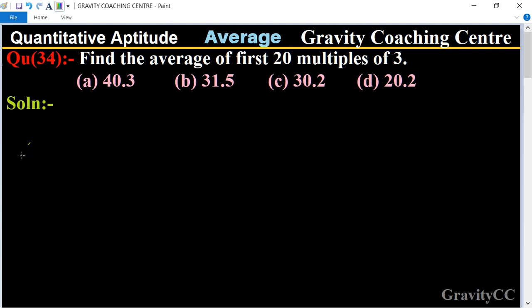Therefore, the average equals the sum of 20 multiples of 3, which means 3 plus 6 plus 9 plus dot dot to 60, all divided by 20.